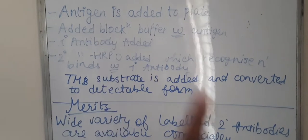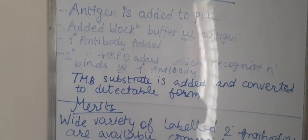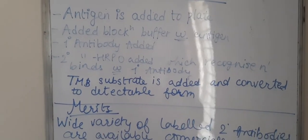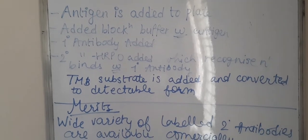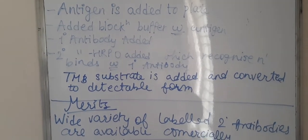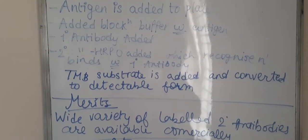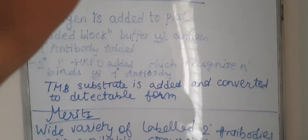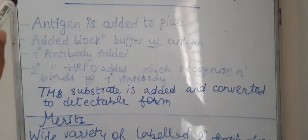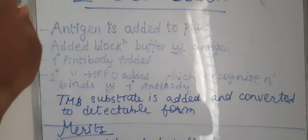Next, there will be a primary antibody which will be added. Next, there will be a secondary antibody HRPO added which will recognize the primary antibody and then it will bind with the primary antibody. Now you clearly have to remember this sequence.